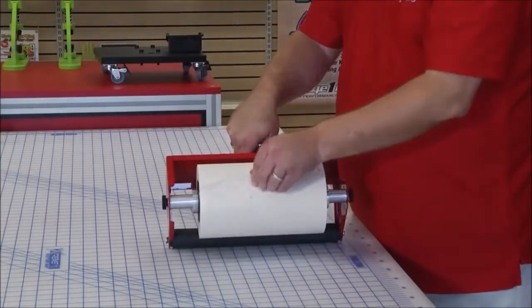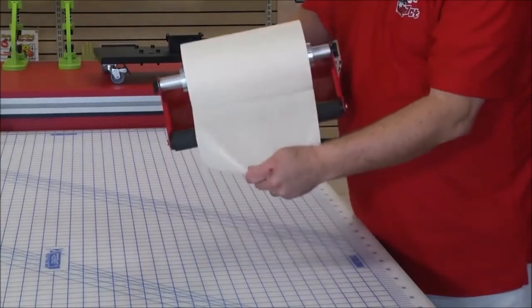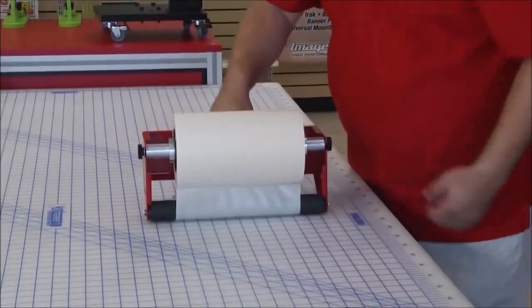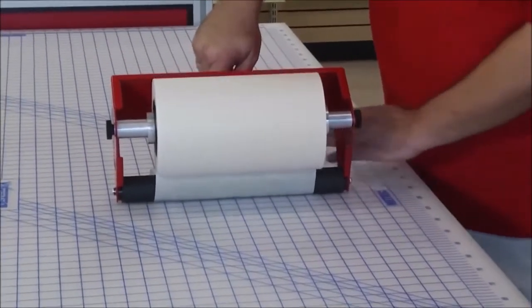You simply find the edge of your application tape. You pull it to start, and you roll it around the bottom roller. Drop the bottom roller into place. Now, you've got a great base for working with.